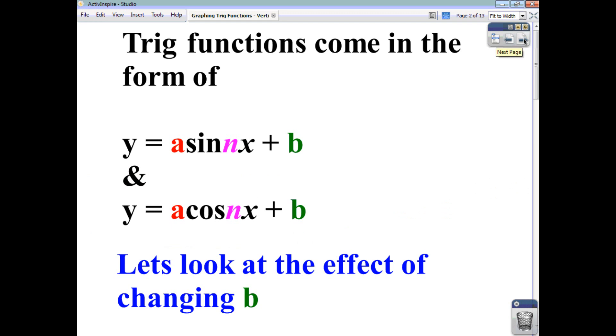So we've already mentioned that trig functions come in the form of y equals a sine nx plus b and a cos nx plus b. We're going to have a look at the effect of this constant, which could be positive or negative, at the end of our function.